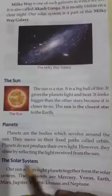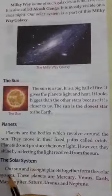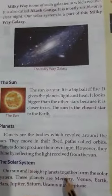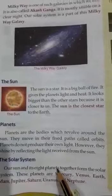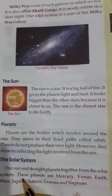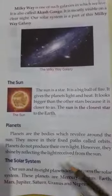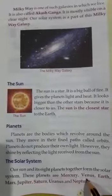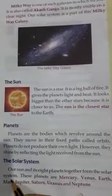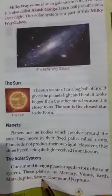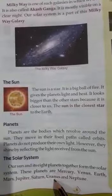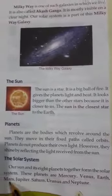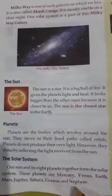Next point: The Solar System. Saur Mandal. Our sun and its eight planets together form the solar system. Hamare surya aur uske aath grah ek saath Saur Mandal mein hain. These planets are: Mercury, Venus, Earth, Mars, Jupiter, Saturn, Uranus, and Neptune. Budh, Shukra, Prithvi, Mangal, Brihaspati, Shani, Arun, aur Varun.